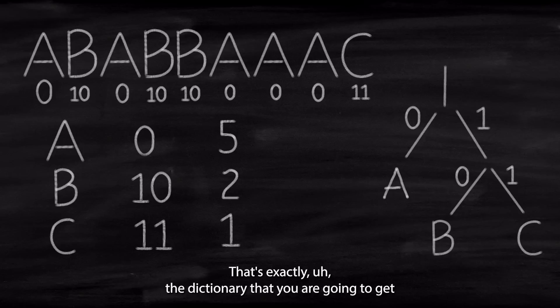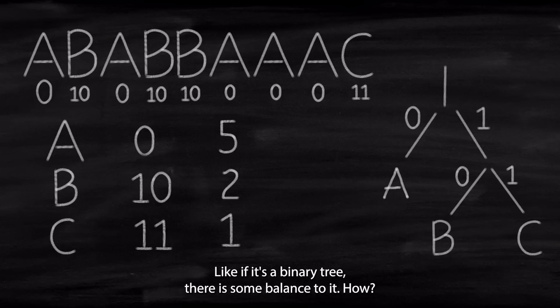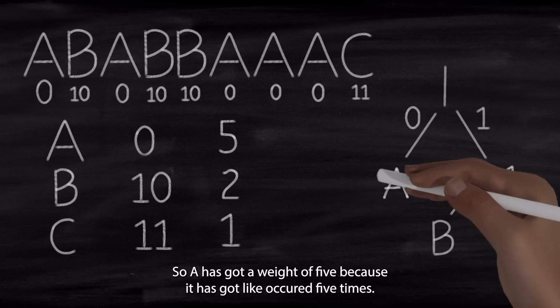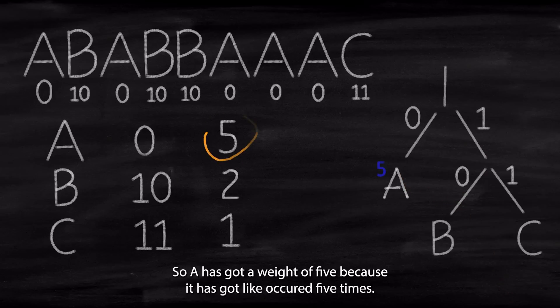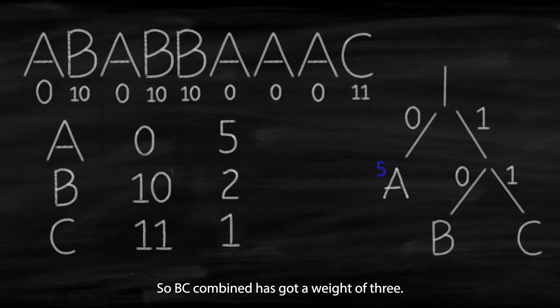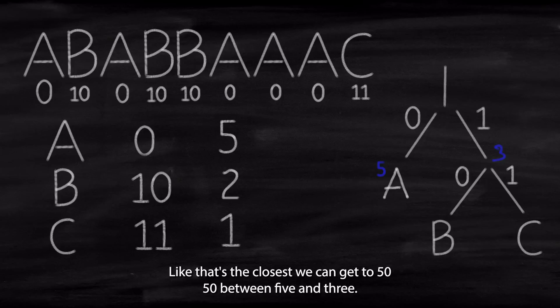So it's like a decision tree that you go through when you are decompressing. That's exactly the dictionary that you are going to get. And notice here that this tree is balanced. Like, if it's a binary tree, there is some balance to it. Because A has got a weight of 5, right? Because it occurred 5 times. So it has got an occurrence of 5. B and C together, so this whole branch is A. This whole branch is B, C. So B, C combined has got a weight of 3. Their weight combined is kind of balanced. Like, that's the closest we can get to 50-50.